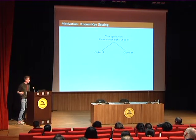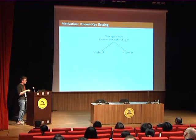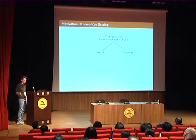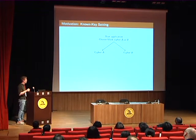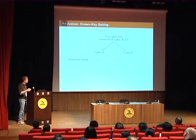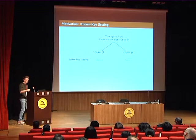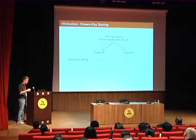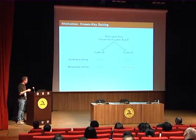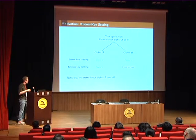We should think about motivating the known-key setting. Imagine you have an application for a block cipher and you have the choice between two block ciphers A and B. Maybe these two ciphers in the secret key setting are both secure, so you don't know what to choose. But it might be interesting to look at stronger adversarial assumptions, for example the known-key setting, where there might be some cryptanalysis on cipher B. So cipher A is the more preferable choice.